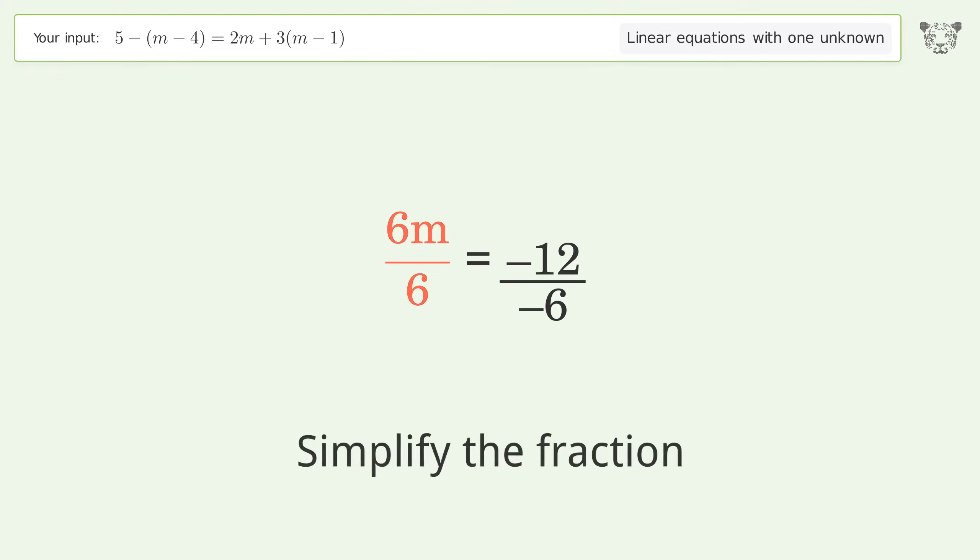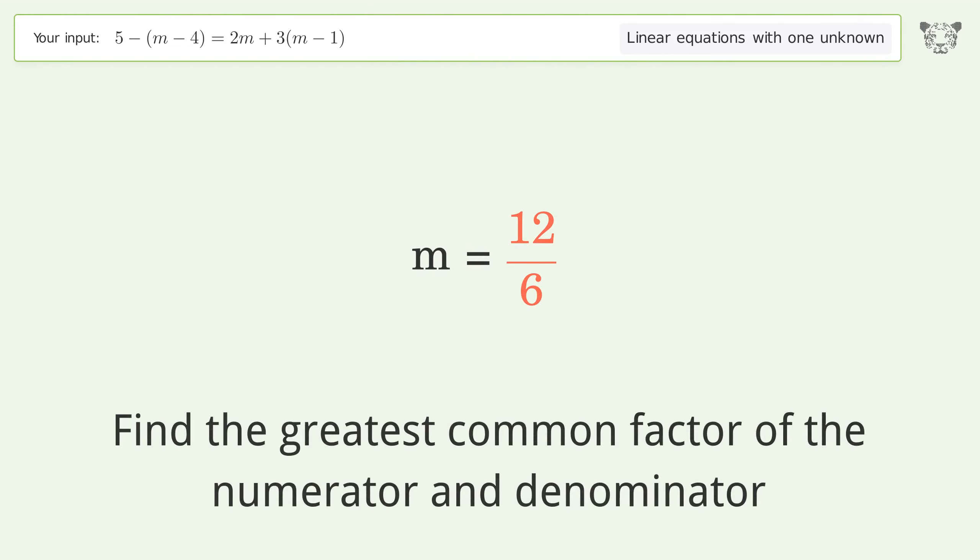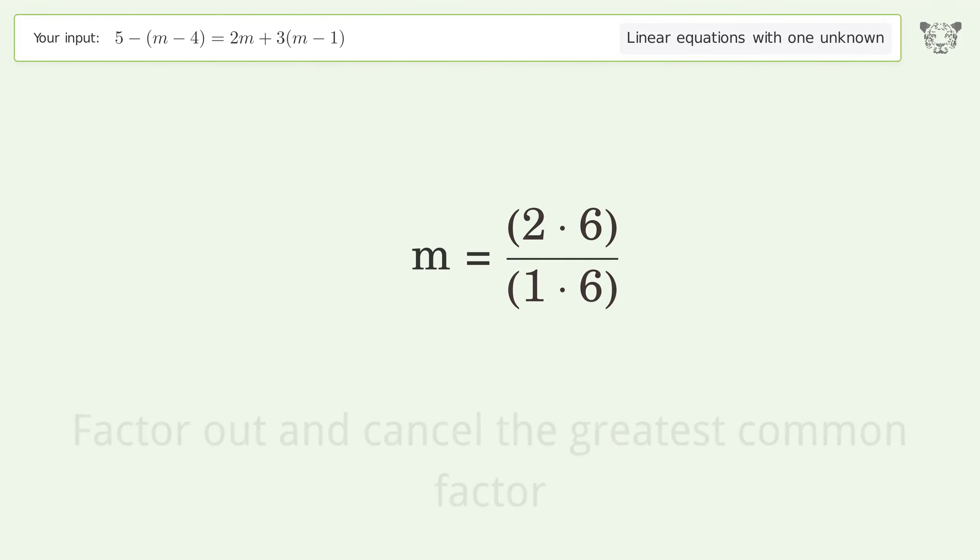Simplify the fraction. Cancel out the negatives. Find the greatest common factor of the numerator and denominator. Factor out and cancel the greatest common factor.